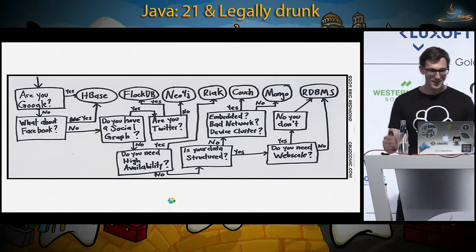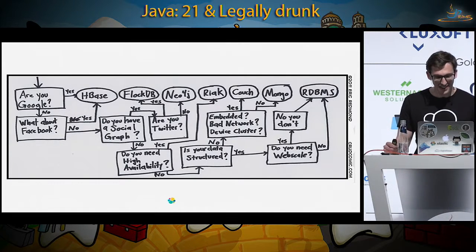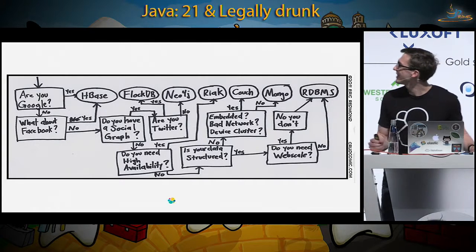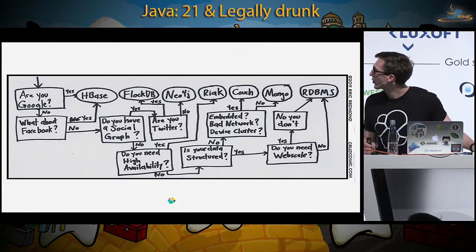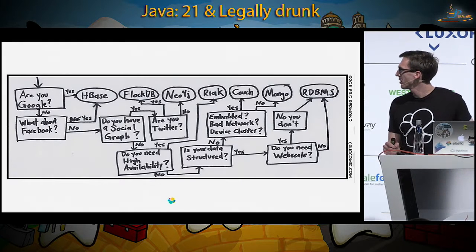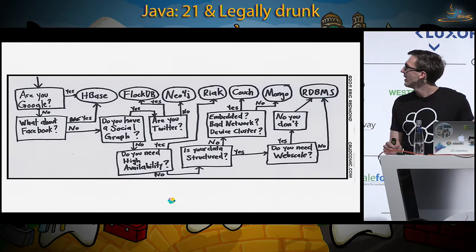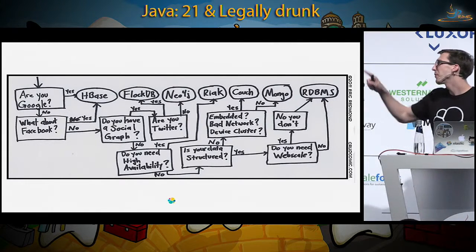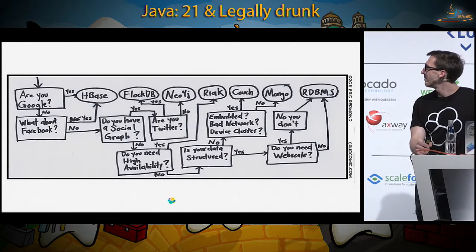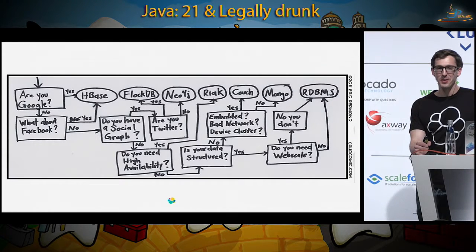There's a chart you can use to check which database is right for you — a decision graph. It's a little older so you can still see things like FlockDB, which Twitter created. You can go through the graph and see where you end up. It would be interesting to see where everybody lands.